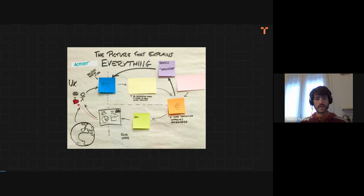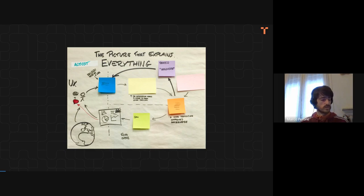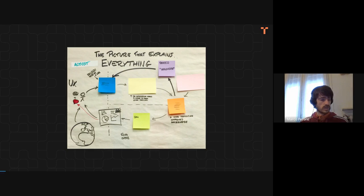In Event Storming you gather technicians, domain experts, and basically whoever is interested in an application which needs to be understood, and you need to extract information about it — all in a room. You basically stick a lot of post-its on a wall, post-its of different colors, and every color has a different meaning.